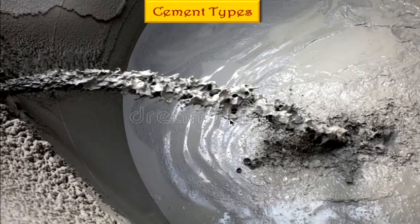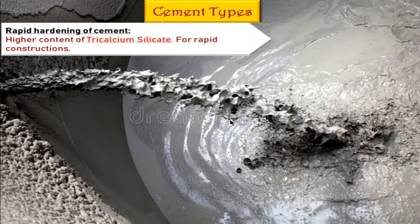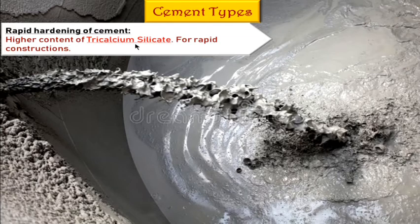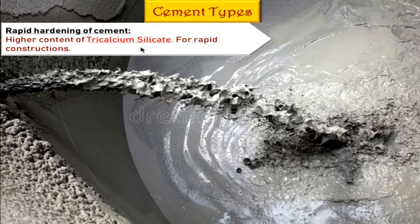Next we talk about cement types. First, rapid hardening cement — compared to Portland cement, it has a higher concentration of tricalcium silicate. The actual ratio is 30 percent, but more is added here. This is done for quick constructions in public places like pavements where quick hardening of the cement is needed.